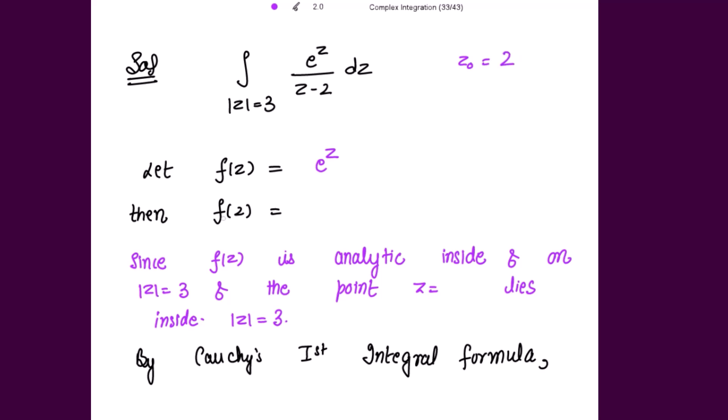Then the value of the function at this point is just putting the value of z equal to 2, we get e^2. And this function e^z is analytic inside and on |z| equal to 3, and the point z equal to 2 lies inside the circle.